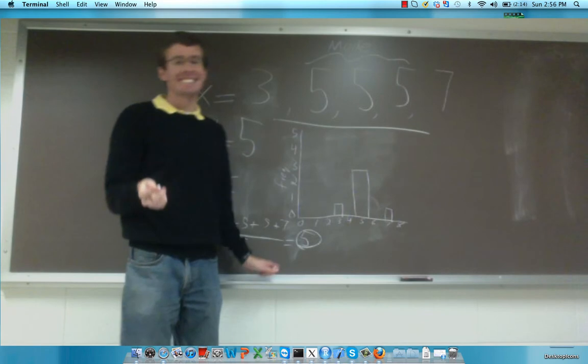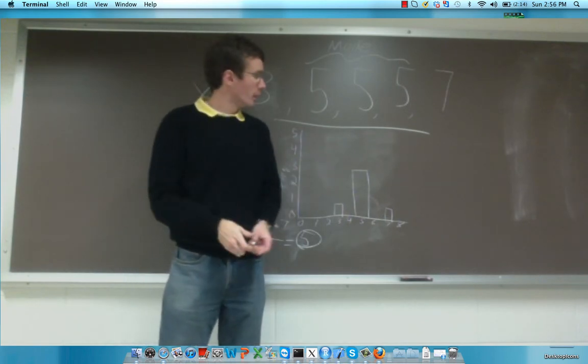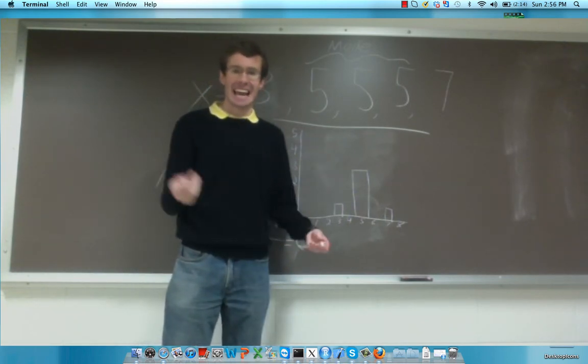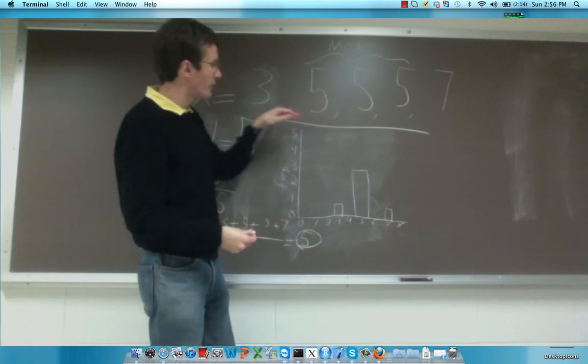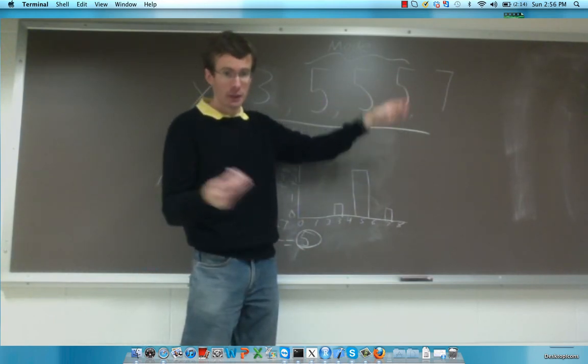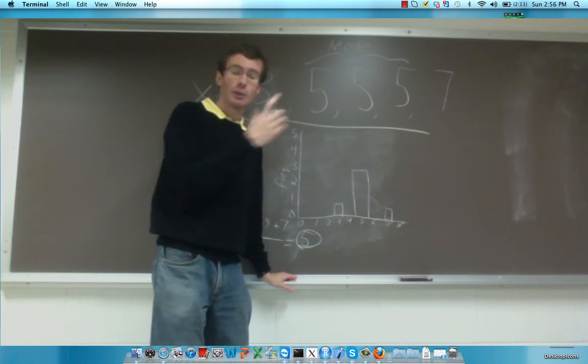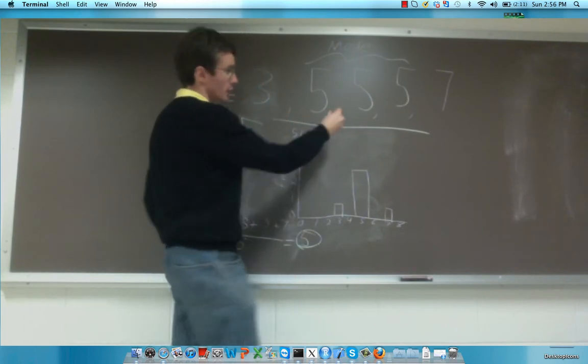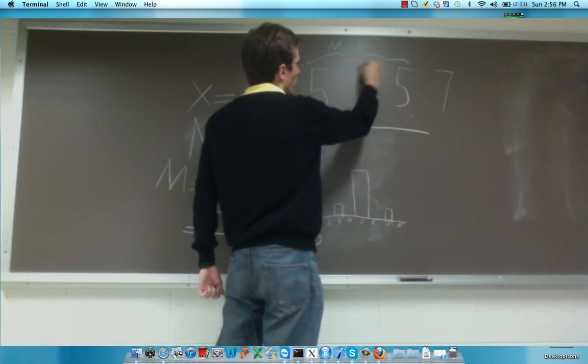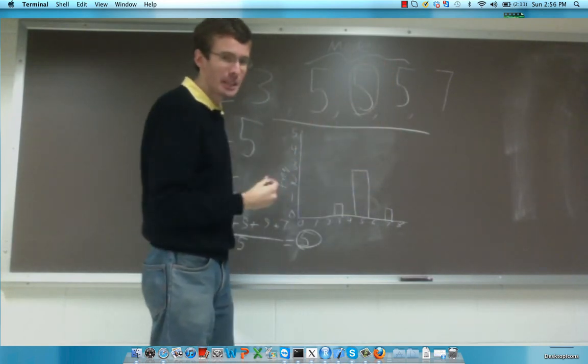The last measure of central tendency is something called the median, and that simply splits your data in half. In this case, we have an odd number of observations, 5. So, the median is going to be the very middle of those observations, which is, again, going to be 5, or this number right here. That's the median.